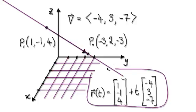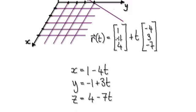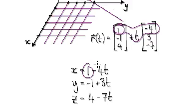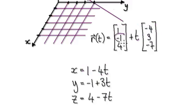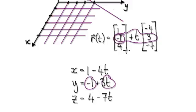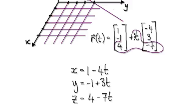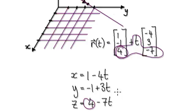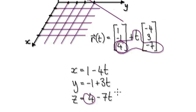From here we can extract our parametric equations. Looking in the x direction, we start at 1 and then minus 4t. In the y direction, we start at negative 1 and then plus 3t. And in the z direction, we start at 4, and so on. There are lots of ways of describing this line.